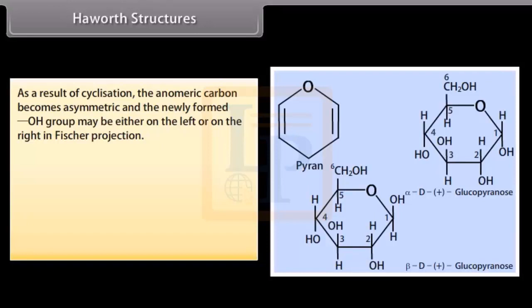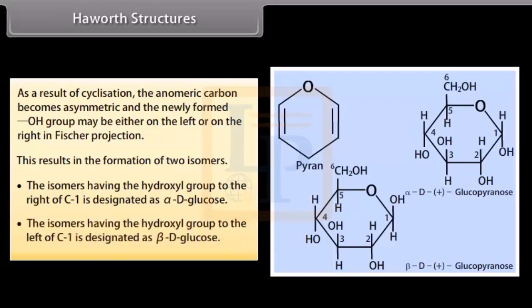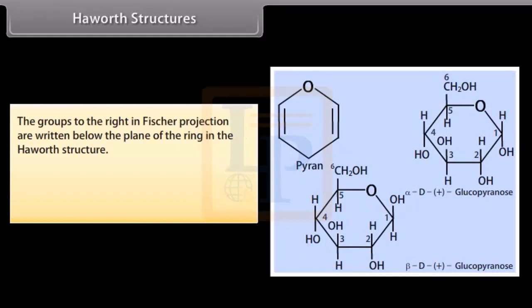In Haworth structures, as a result of cyclization, the anomeric carbon becomes asymmetric and the newly formed OH group may be either on the left or on the right in Fischer projection, resulting in the formation of two isomers. The isomer having the hydroxyl group to the right of C1 is designated as alpha-D-glucose, and the isomer having the hydroxyl group to the left of C1 is designated as beta-D-glucose. The lower thickened edge of the ring in the Haworth structure is nearest to the observer. Groups to the right in Fischer projection are written below the plane of the ring in the Haworth structure.